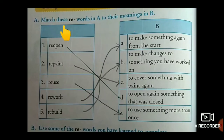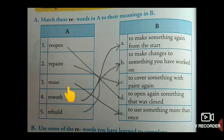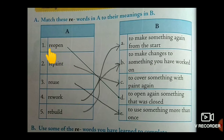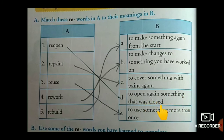Moving on to the next page. Here, match these re-words in A to their meanings in B. The re-words are: re-open, re-paint, re-use, re-work, re-build. R-E, 're,' means 'again.' See the meaning of re-open: to open again something that was closed.